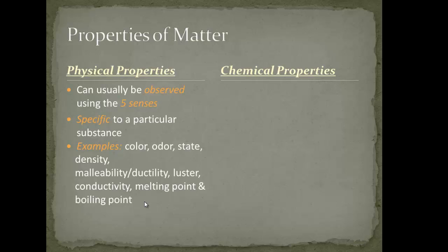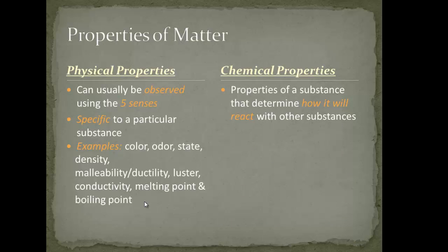When we contrast chemical properties with physical properties, we see things that are a little different. Chemical properties of a substance determine how it will react with other substances. It's not something you can see directly in the substance — you have to have the substance come in contact with another substance and see what type of reaction occurs. We'll learn that we can use the periodic table to begin to predict what types of reactions will occur between substances as they interact with one another.